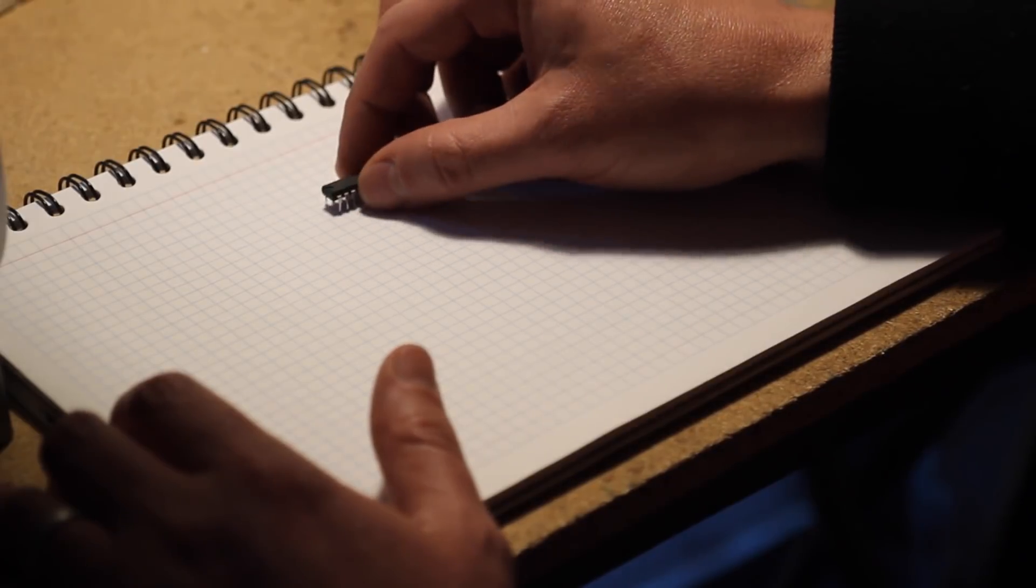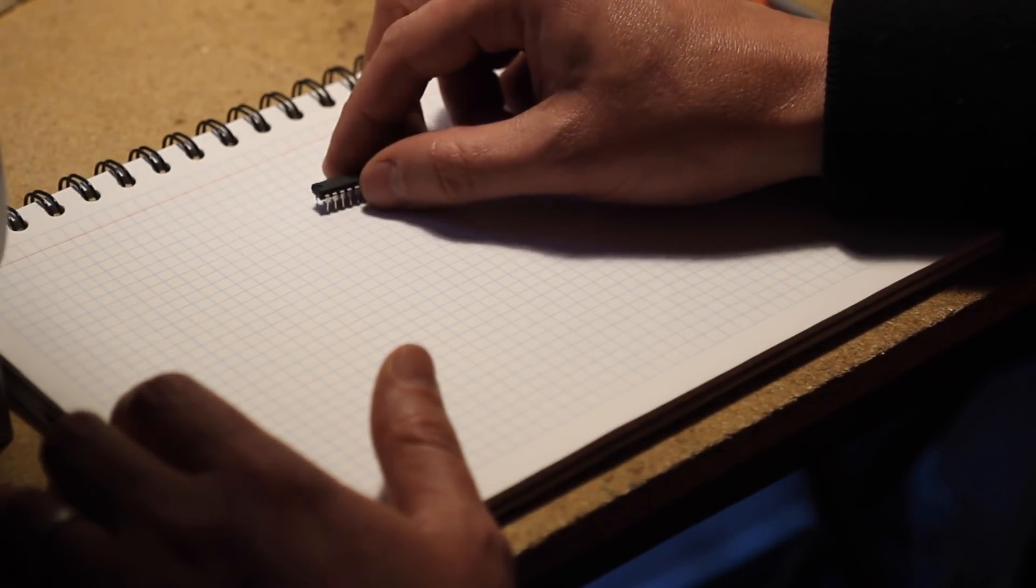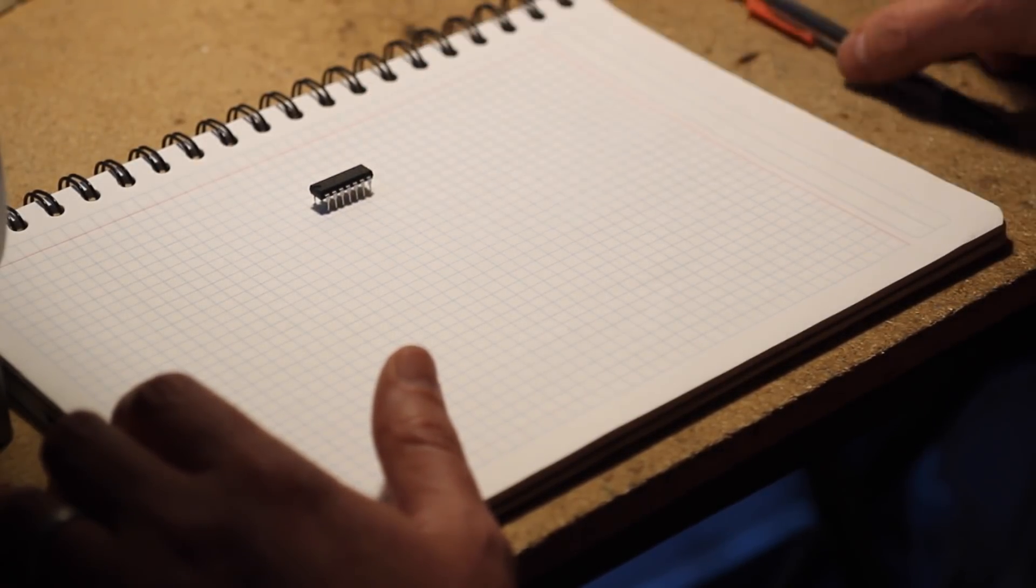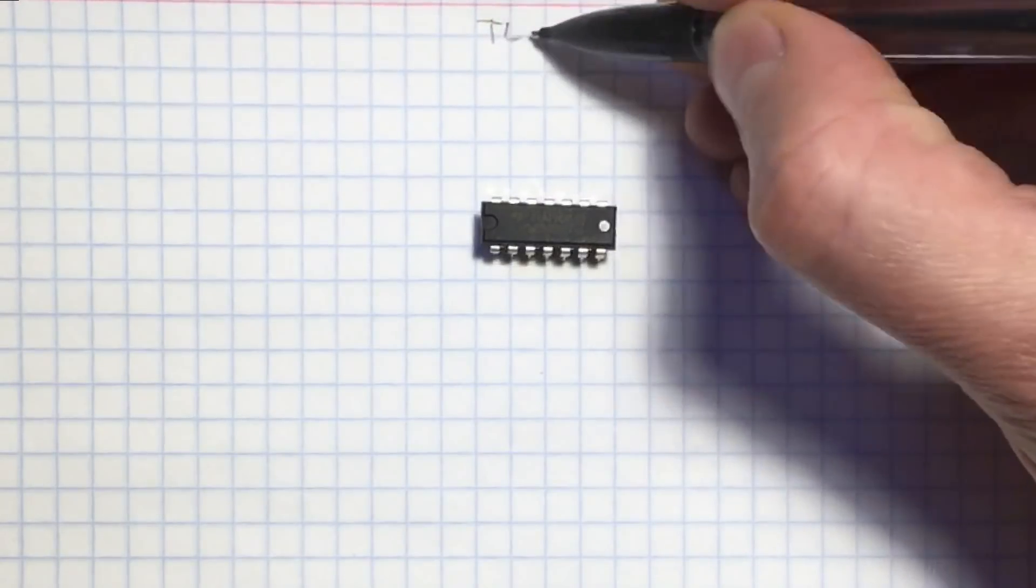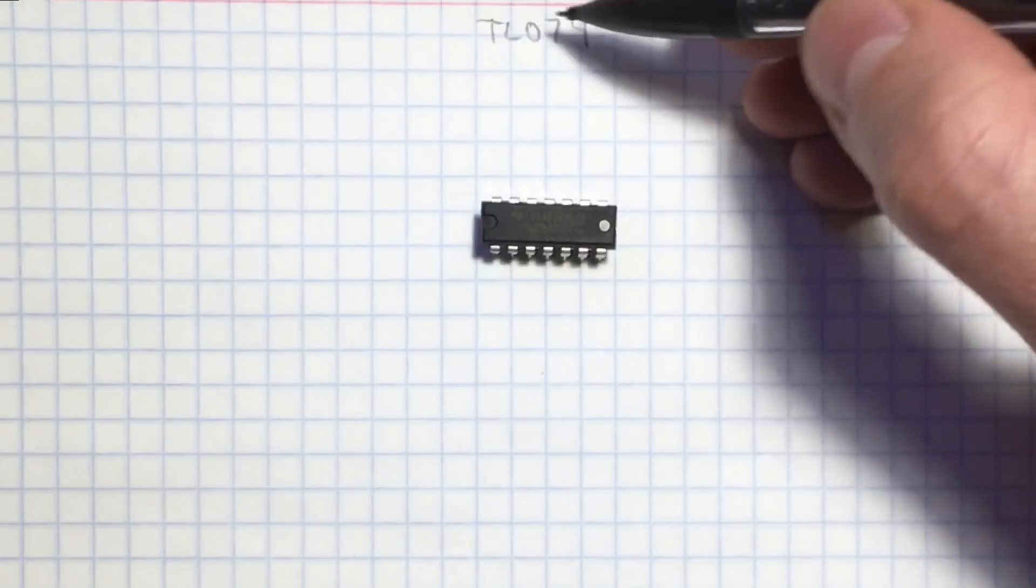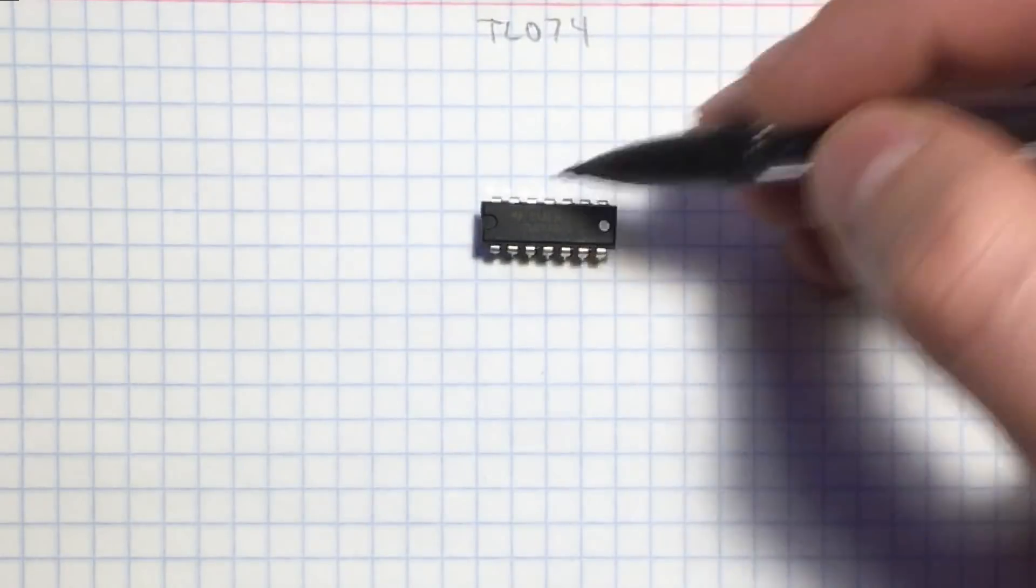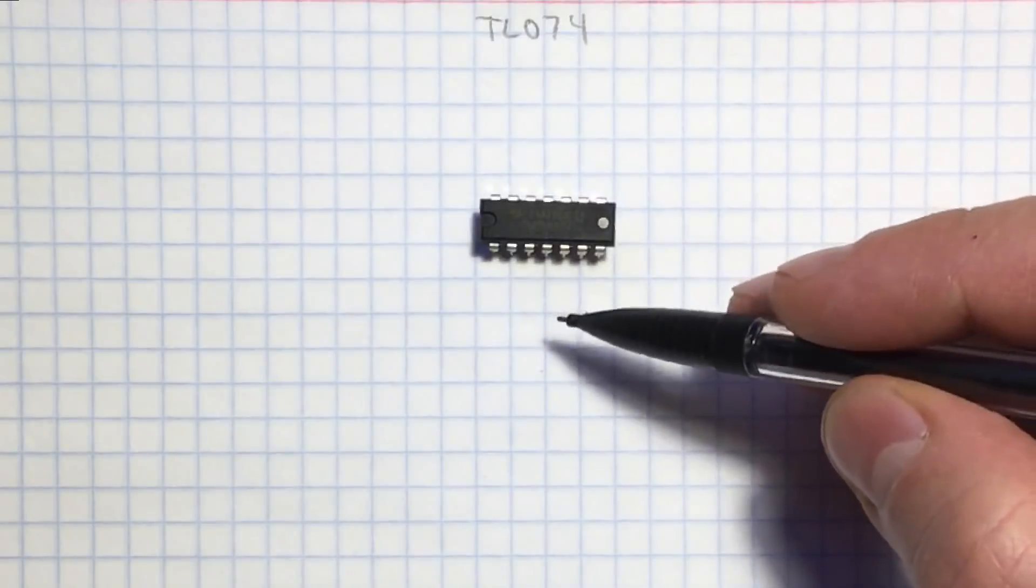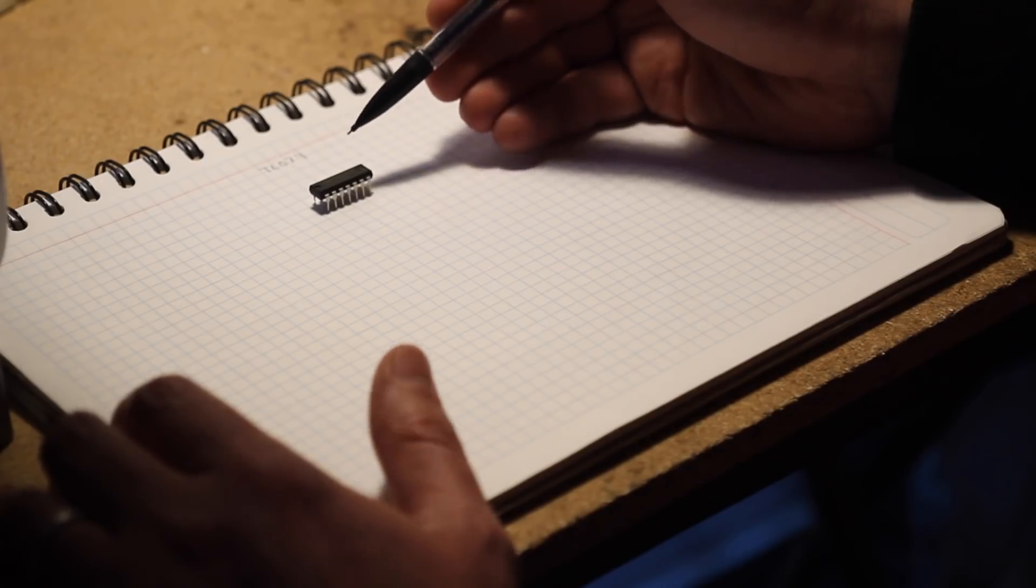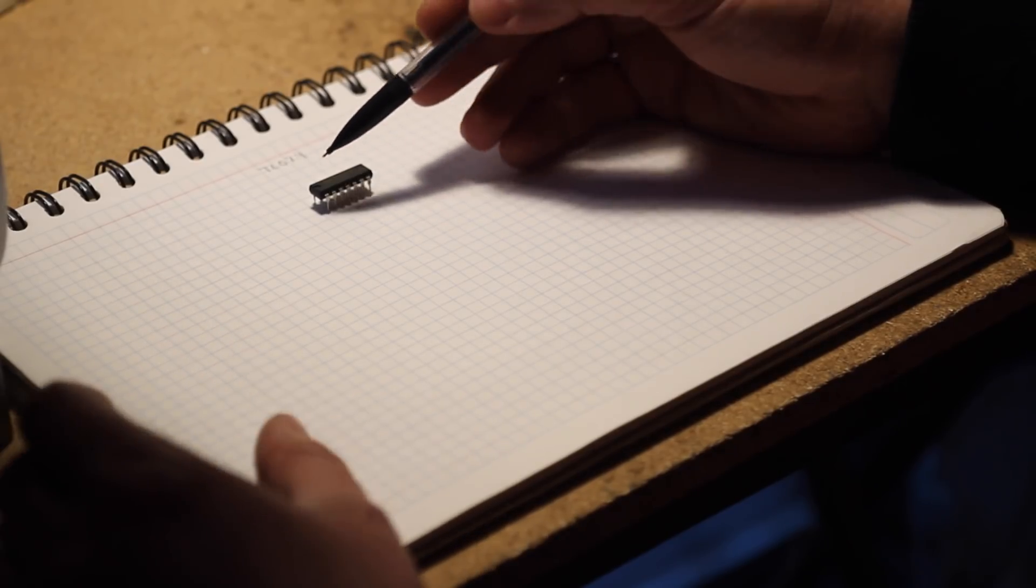This is an integrated circuit containing four op-amps in there. It's a quad op-amp and it's called the TL074. There's the TL072 that only has two and there's a TL071 that only has one. I like to use this one a lot because it's quite common to need many op-amps in a circuit, and having four of them in one single chip is very useful.